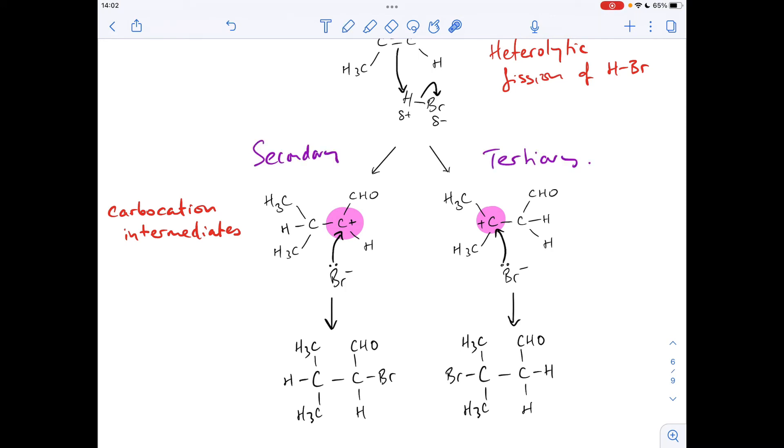So the next thing we do is bring in the relative stability of these two intermediates. So secondary isn't as stable as tertiary. So more of the tertiary carbocation intermediate will form compared to the secondary. So this will be the major product.